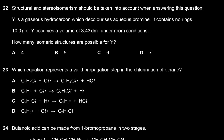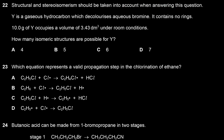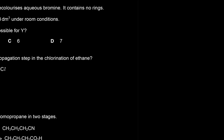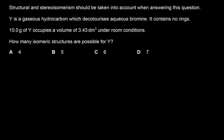Y is a gaseous hydrocarbon that decolorizes aqueous bromine and contains no rings. 10 grams of Y occupies 3.43 dm³ under room conditions. It decolorizes bromine, so it has a C=C double bond. The number of moles = 3.43/24 = 0.1429 mol. The molar mass = 10/0.1429 ≈ 70 g/mol.